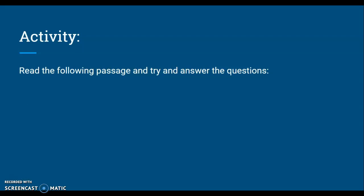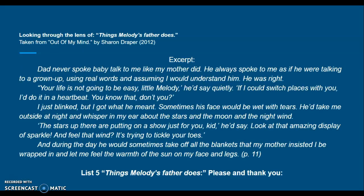Now we're going to look at our first activity: reading for details. You're going to read the following passage and try to answer the questions. This is an excerpt from the book Out of My Mind by Sharon Draper, published in 2012. We're looking through the lens of things that Melody's father does. Take a moment to read this short passage — I will pass out the excerpt — and then list five things that Melody does.